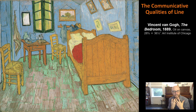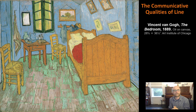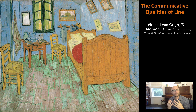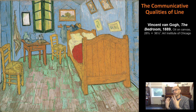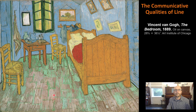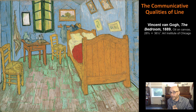Line can also communicate negative things. Look at the lines in this painting by Vincent van Gogh, a man who often suffered from mental difficulties and emotional problems. Look at the way he's painted the lines, especially in the floor of his bedroom — they feel nervous, unsure, and intense. Even though the colors look calm and peaceful — blues and greens dominating — the line tells us another story of intensity and passion.